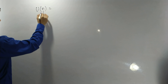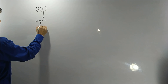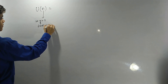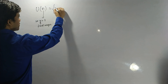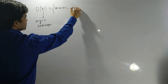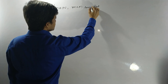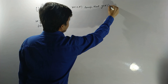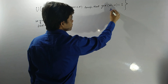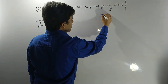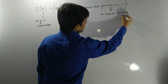Let n be a fixed integer greater than 1. Then U(n) is defined as the set of naturals m less than n such that GCD of m and n equals 1. We can also say that m and n are co-prime, or relatively prime.